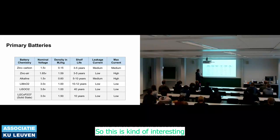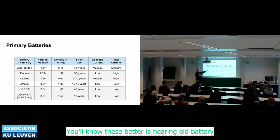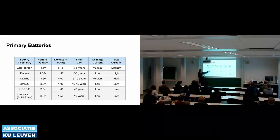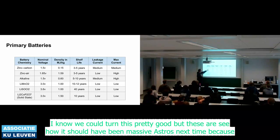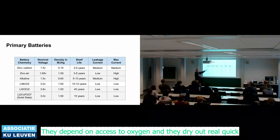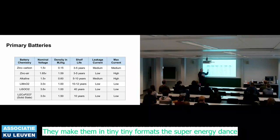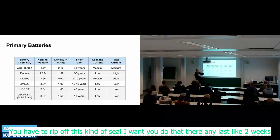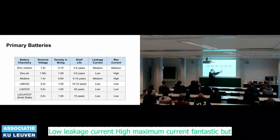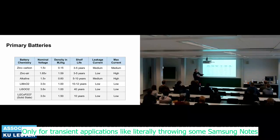Zinc-air batteries — better known as hearing aid batteries — are extremely energy dense and have good shelf life and low leakage current. But they have a massive asterisk: they depend on oxygen access and dry out very quickly once the seal is removed. A hearing aid battery is available in tiny formats but only lasts about two weeks after unsealing. They're fantastic but only for transient applications, like deploying sensor nodes for a week's monitoring.